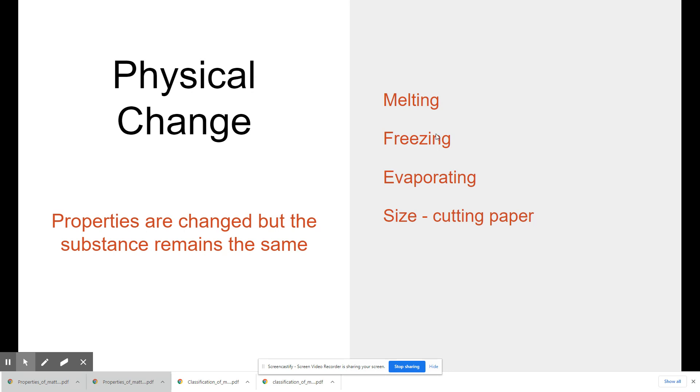Physical changes. Anytime you're doing a physical change, you're not changing the substance. So that's really the key there. Properties are changed, but the substance remains the same. So you might change the way it looks, but you're not changing the substance. You might change it from, if I melt an ice cube, well now it went from an ice cube to, it went from a solid to a liquid. But it's still water. It doesn't turn into something else. So a physical change, it just changes from one thing to another.